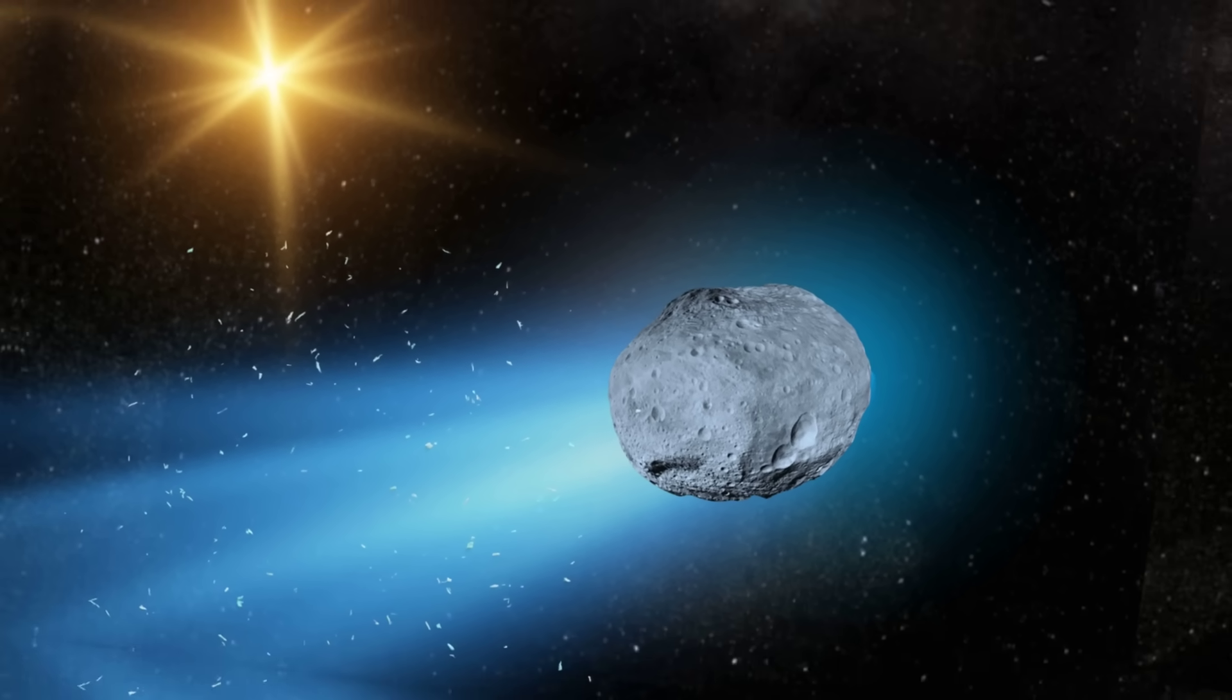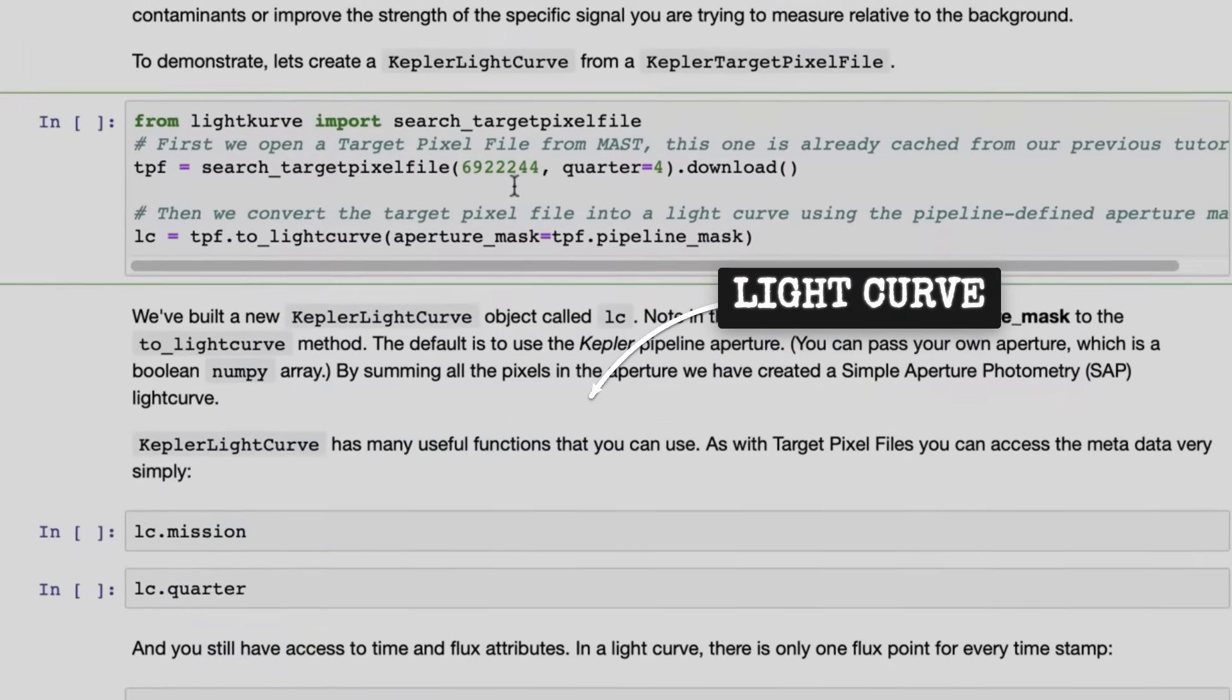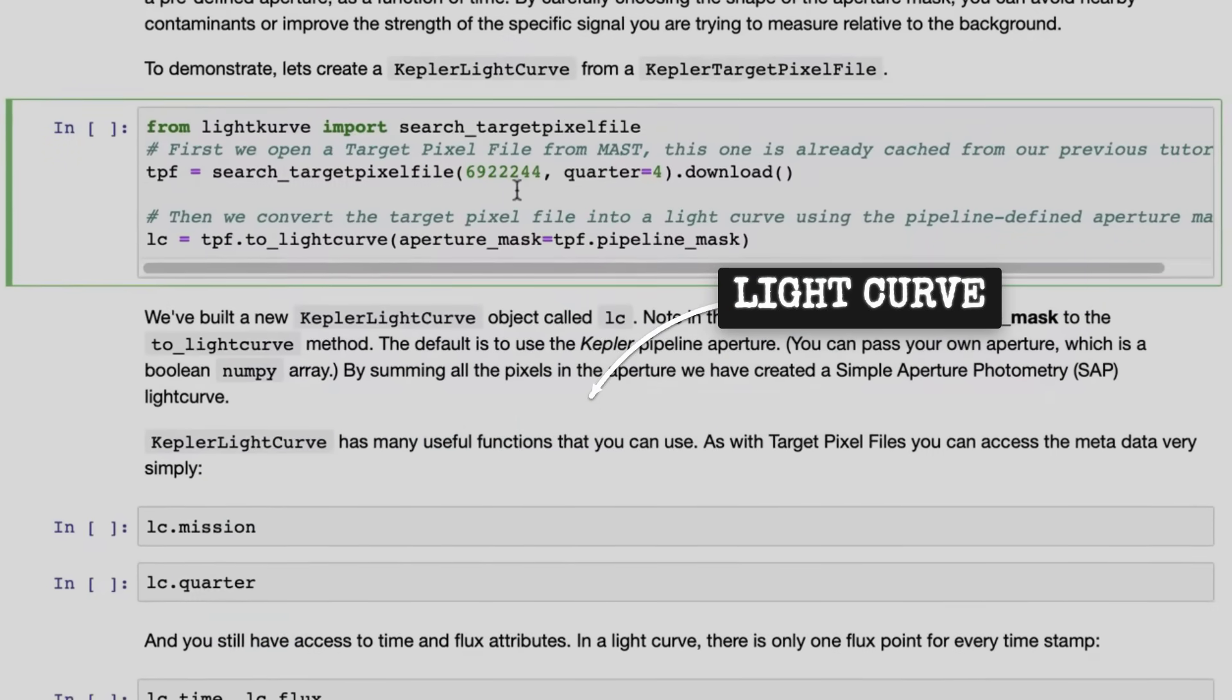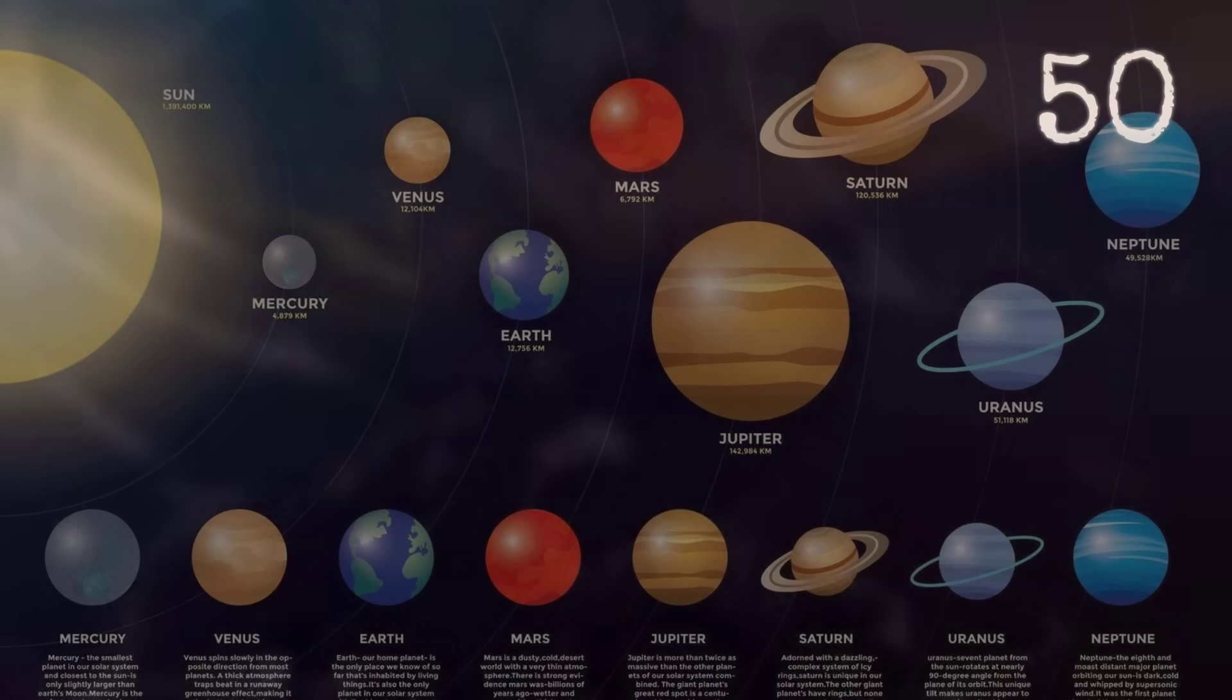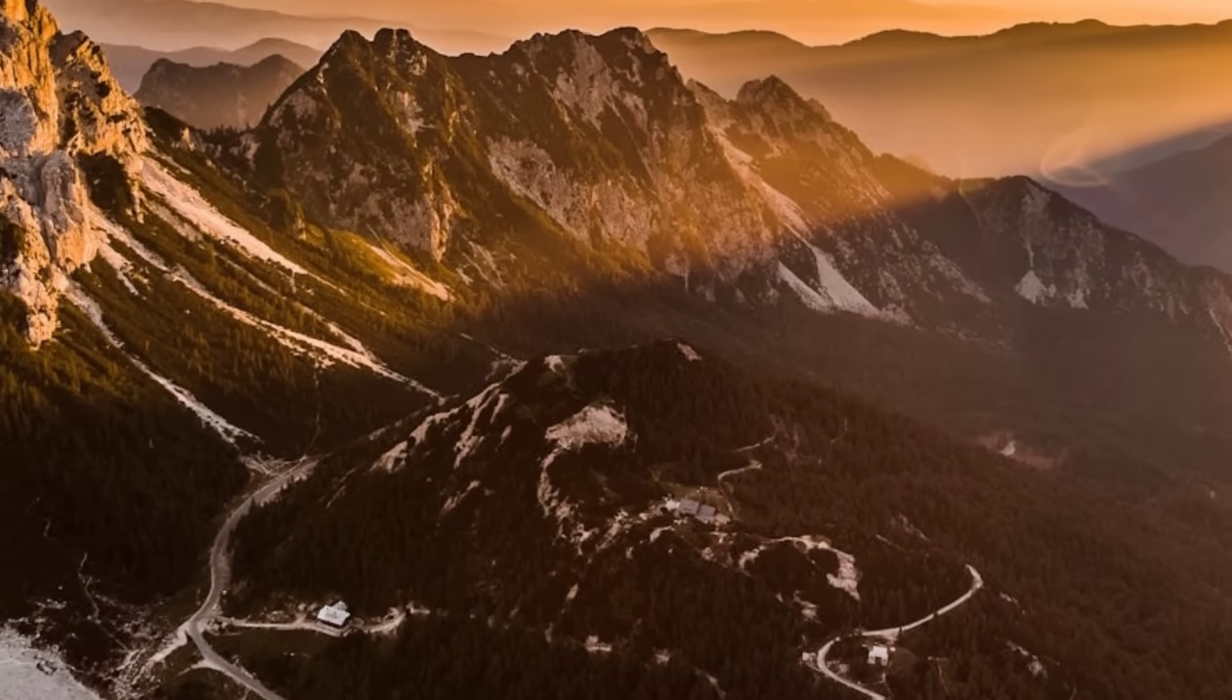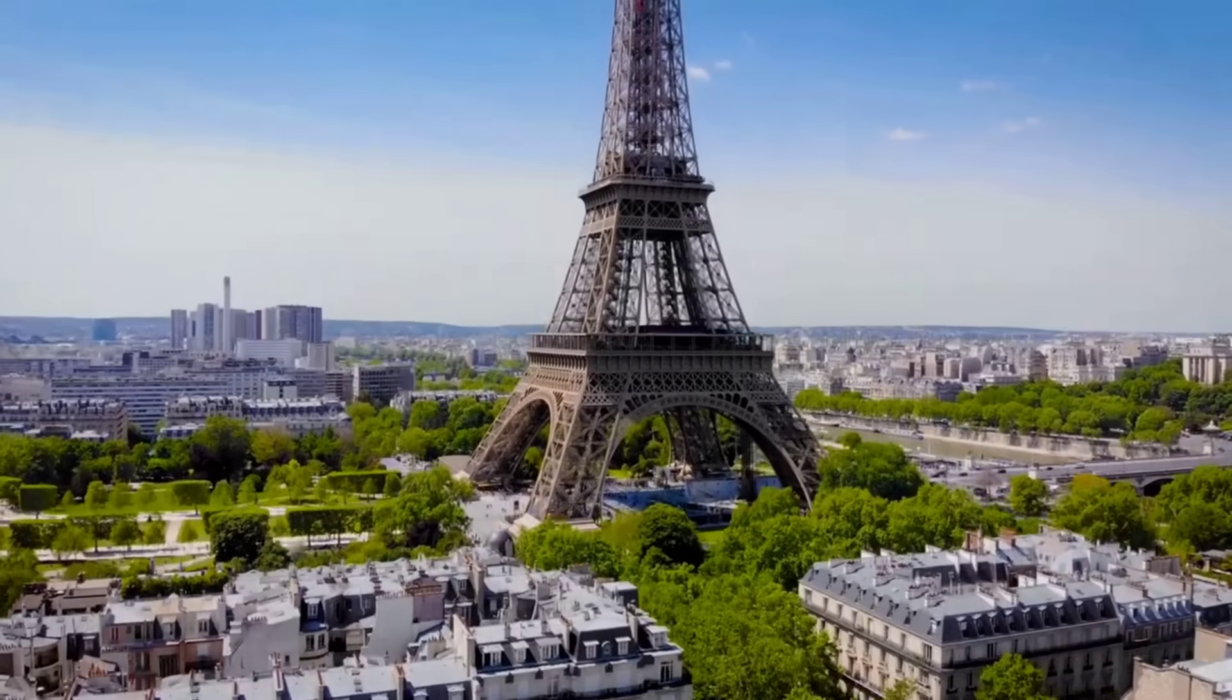And third, its size is massive for an interstellar object. Based on brightness measurements and estimated albedo, we're looking at something between 5 and potentially 50 kilometers in diameter. To put that in perspective, that's anywhere from the size of a small mountain to roughly half the width of Paris.